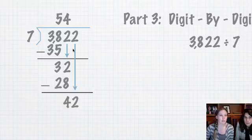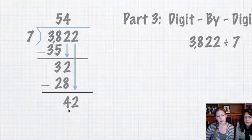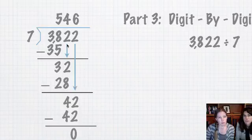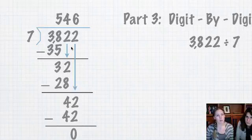Subtract, I get four. Bring down my two, I get 42. So how many times does seven go into 42? Each time I bring one down, this is my new number that I'm dividing into. So seven goes into 42 six times. Seven times six is 42, so we have a remainder of zero.